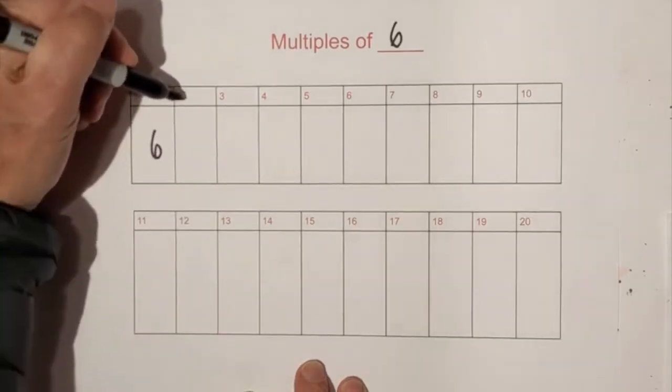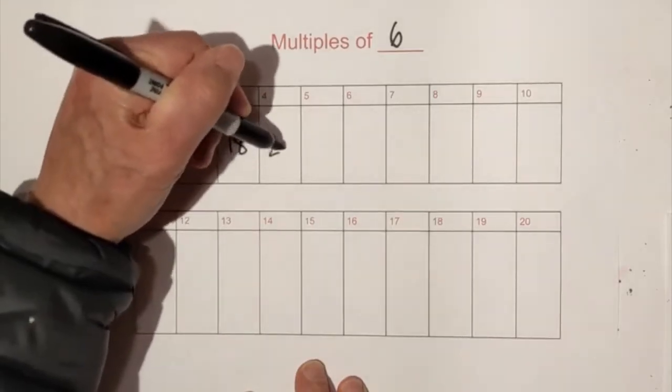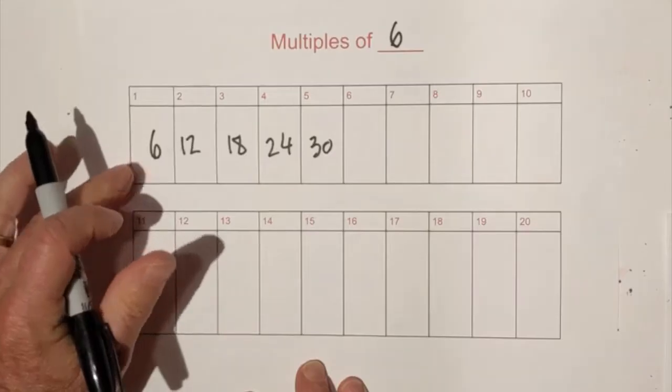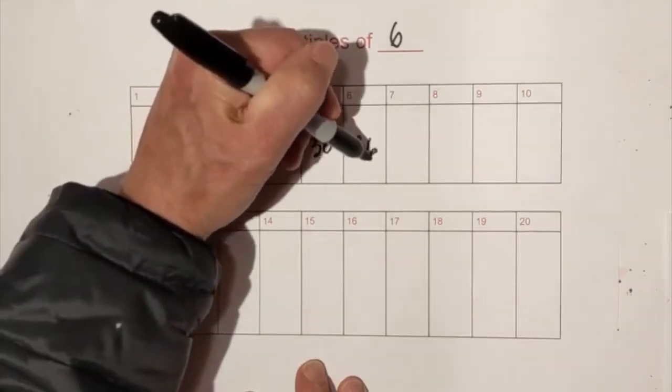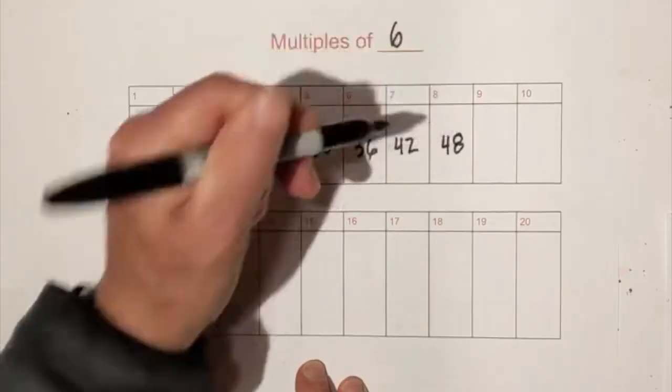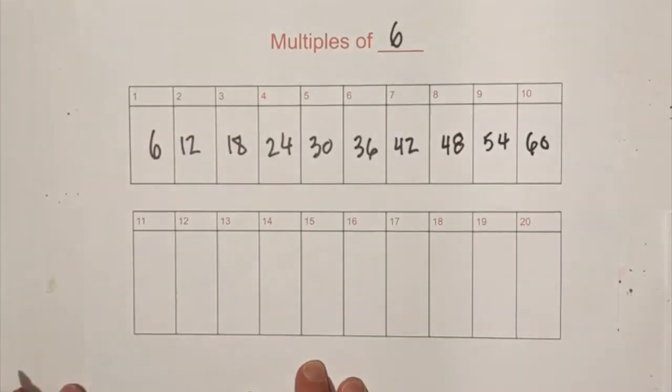We have 6, 12, 18, 24, 5 times 6 is 30, and we have 36, 42, 48, 54, and then 60. So now let's move down to 11.